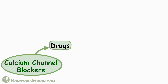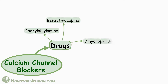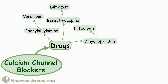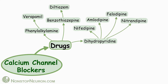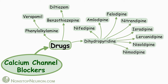First, the names of drugs. There are three chemical classes of calcium channel blockers: phenylalkylamine, benzothiazepine, and dihydropyridines. Phenylalkylamine has verapamil, benzothiazepine has diltiazem, and dihydropyridines include nifedipine, amlodipine, felodipine, nitrendipine, isradipine, lacarnidipine, nisoldipine, nimodipine, lacidipine, benidipine, etc.